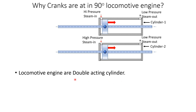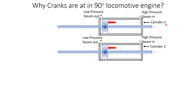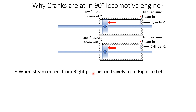Locomotive engines are double-acting cylinders. Looking at the two cylinders from the top, high-pressure steam enters from the inlet valves and low-pressure steam is exhausted from the outlet ports. When steam enters from the left port the piston travels from left to right; when high-pressure steam enters from the right port the piston moves from right to left and spent steam exhausts from the left port.